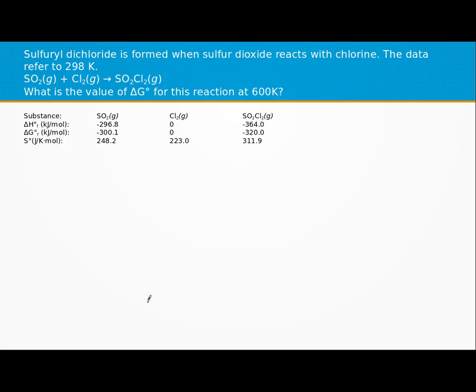All right, sulfonyl dichloride is formed when sulfur dioxide reacts with chlorine, given you the equation, and we have a set of data at 298K.